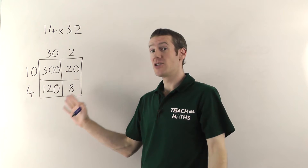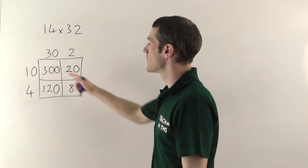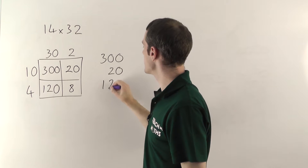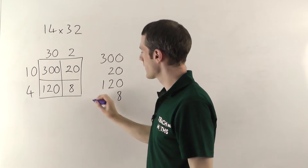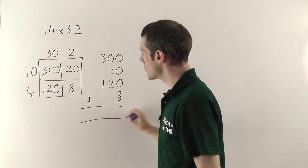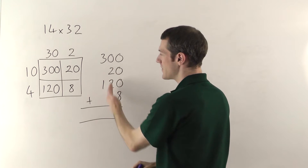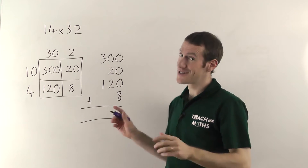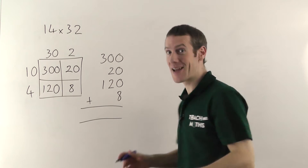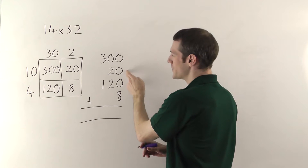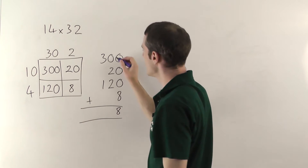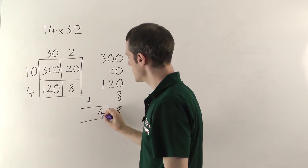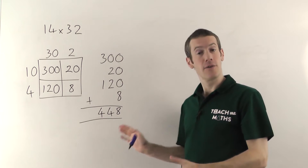Once you've filled out the grid you just add up all the numbers inside. So I've got 300 plus 20 plus 120 plus 8. Do be very careful about your columns here — you must make sure you line them up properly. You've got your units, your tens, your hundreds. If you get them in the wrong columns it's all going to go horribly wrong. 0 plus 0 plus 0 is 8; 0 plus 2 plus 2 gives 4; and 3 plus 1 also gives you 4. So the final answer here is 448.